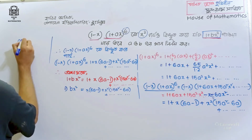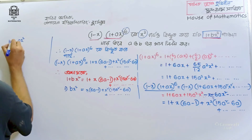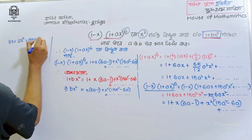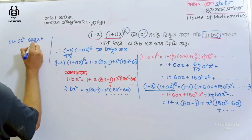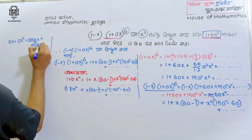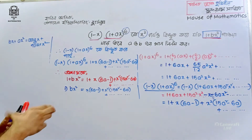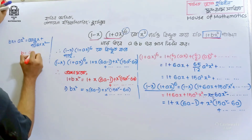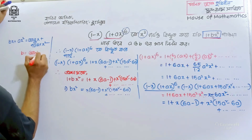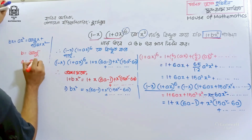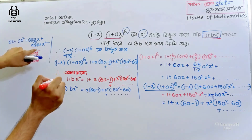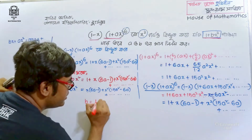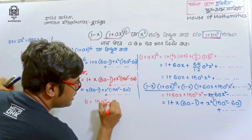Comparing coefficients, we can see that the coefficient of x gives us 6a minus 1, and b is equal to 15a squared minus 6a.